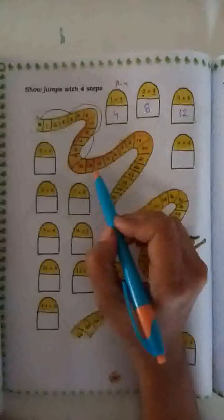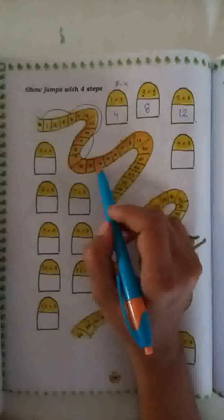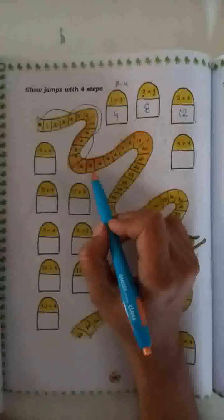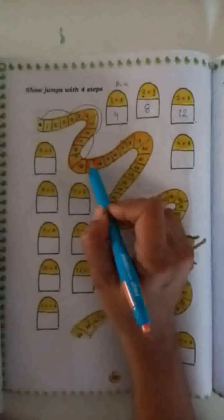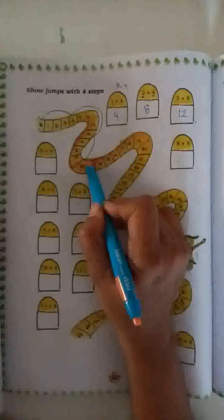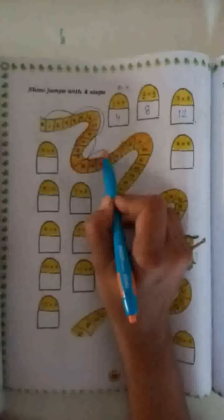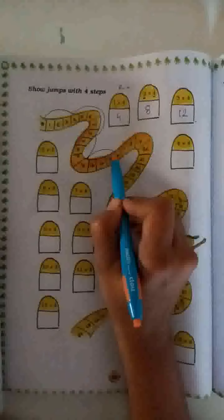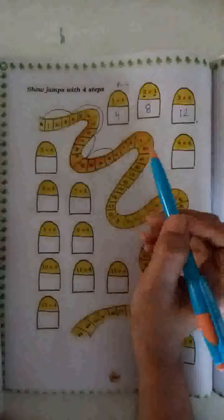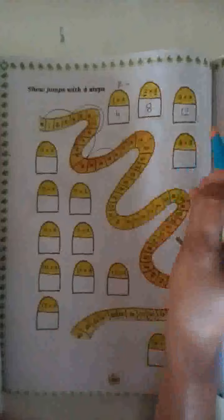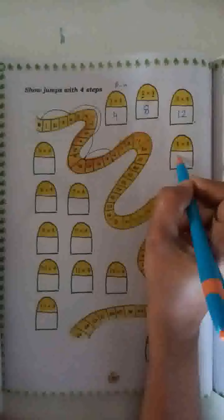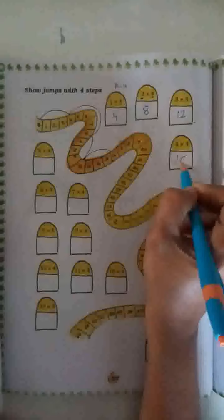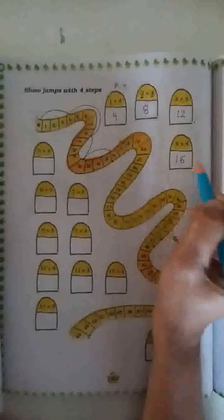Again, 4 steps — skip, jump: 1, 2, 3, 4. It means number 16. So 4 fours are 16.